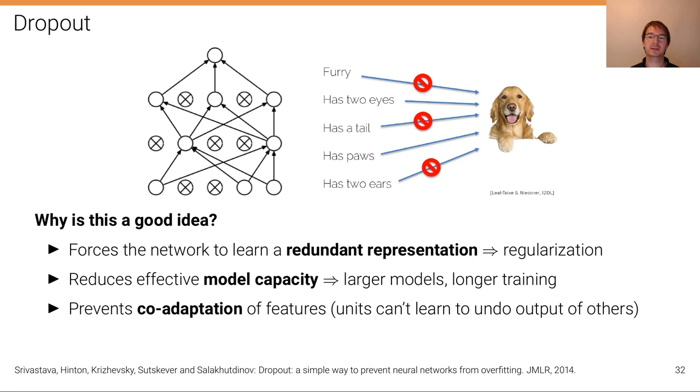So this co-adaptation, which is actually something unwanted because it's not a real effect that we want to model, can be prevented by dropout. Because if we randomly drop out neurons, then the representation that a model learns must be robust to this—it cannot rely on some specific neurons being active in order to change the effect of other nearby neurons. This is called co-adaptation.